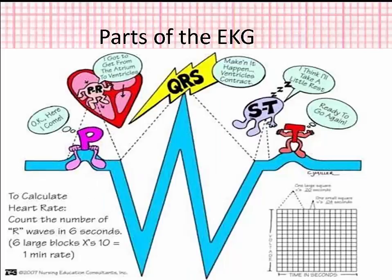The P wave represents the depolarization of the atria; atrial depolarization is atrial contraction. The PR interval is the time period for the impulse to spread through the atria, the AV node, the bundle of HIS, and Purkinje fibers. The QRS interval represents ventricular depolarization or ventricular contraction.